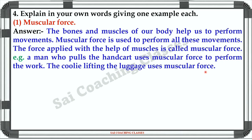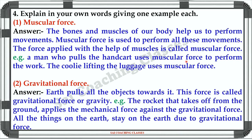B — Gravitational force: Earth pulls all the objects towards it. This force is called gravitational force or gravity. Example: The rocket that takes off from the ground applies mechanical force against the gravitational force. All things on the earth stay on the earth due to gravitational force.